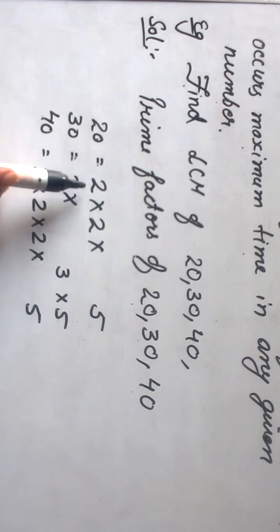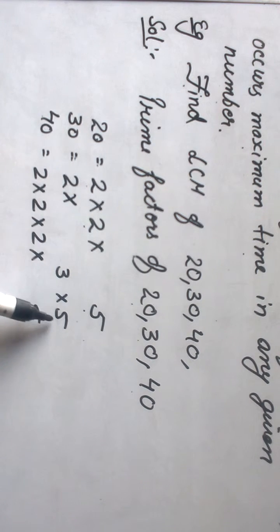Prime factors for 20 are 2 into 2 into 5. Prime factors for 30 are 2 into 3 into 5, and for 40 are 2 into 2 into 2 into 5.